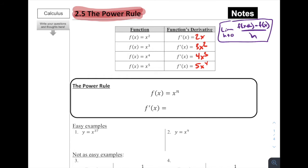How do we generalize this? Let's imagine that we've got a function that is x raised to the nth power. The exponent became the coefficient, so that n is going to become a coefficient and multiply by our x value. And the exponent decreased by one for each of these, so we can write that as x raised to the n minus one power. The power rule for derivatives is: if I want to find the derivative of x to the n power — any function that's like a polynomial function of this form — that's going to be equal to n times x to the n minus one power.